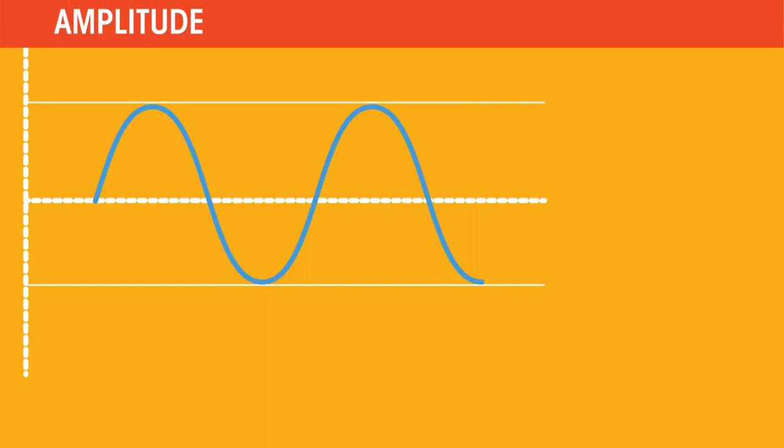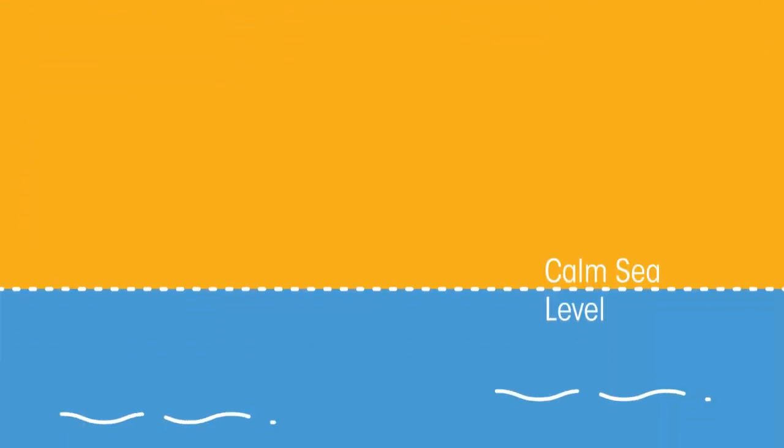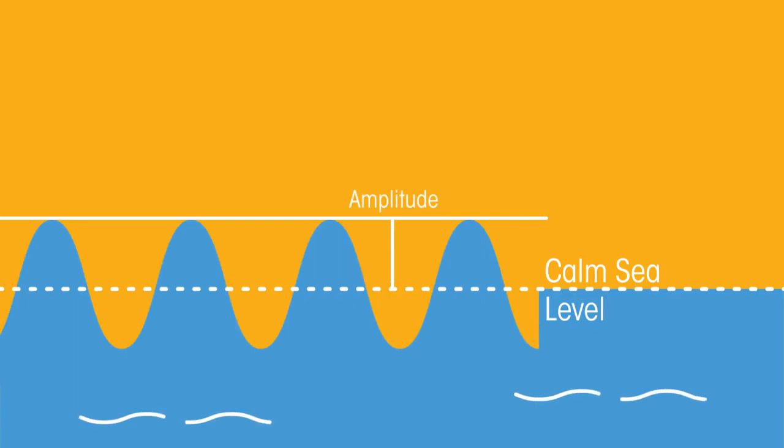As waves travel, they create disturbance. The amplitude of a wave is the distance from the maximum disturbance to the undisturbed position. Think of a very flat sea, and then an incoming wave. The amplitude is the height of the top of the wave from the flat sea.